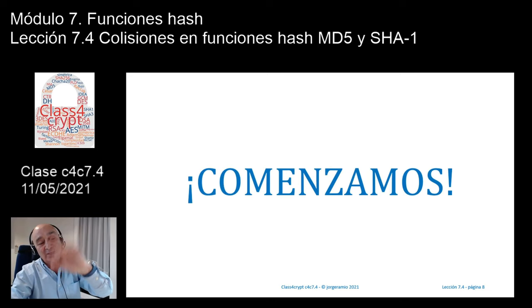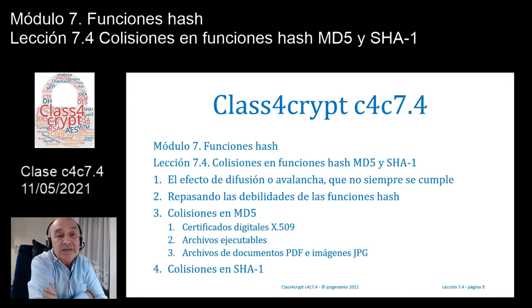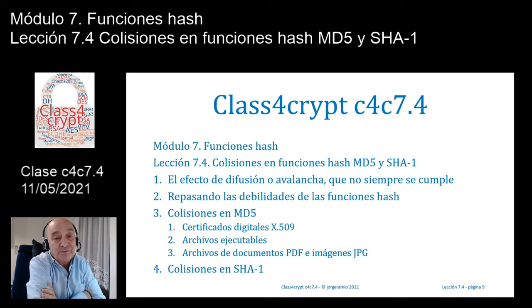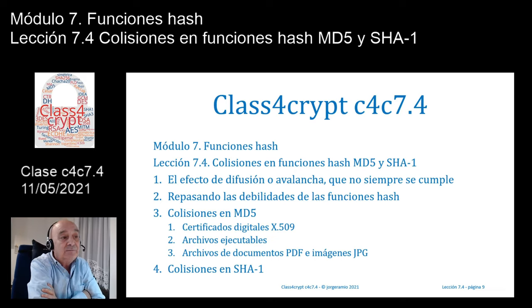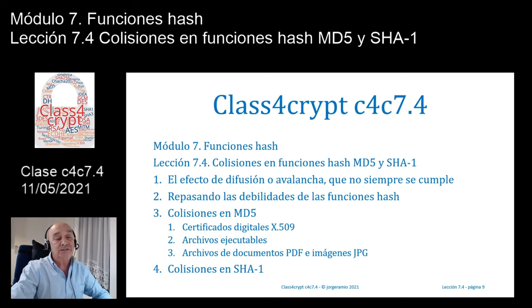Y comenzamos. Hola, ¿qué tal? Encantado de saludarte. Vamos a comenzar la clase de hoy, la clase número 7.4, que lleva por título colisiones en funciones hash MD5 y SHA-1. Nuestra agenda va a ser la siguiente: 1. El efecto de difusión o avalancha, que no siempre se cumple. 2. Repasando las debilidades de las funciones hash. 3. Colisiones en MD5: en certificados digitales X.509, en archivos ejecutables, y en archivos PDF e imágenes JPG. Y por último, colisiones en SHA-1.